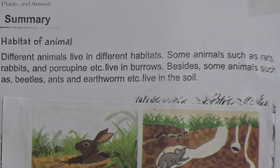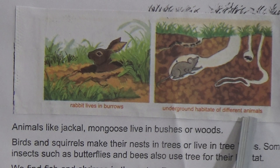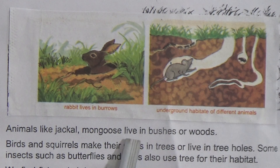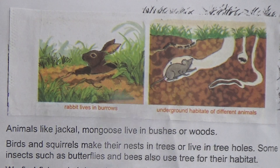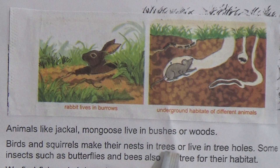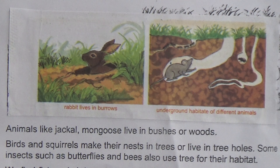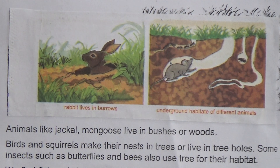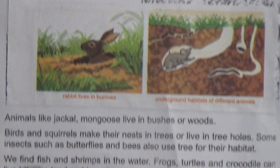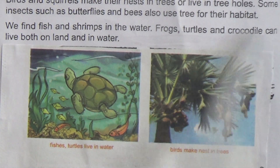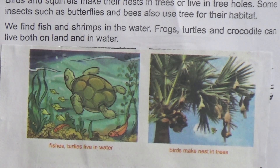Animals like jackal and mongoose live in bushes or woods. Birds and squirrels make their nests in trees or live in tree holes. Some insects such as butterflies and bees also use trees for their habitat. We find fish and shrimps in water. Frogs, turtles, and crocodiles can live both on land and in water.